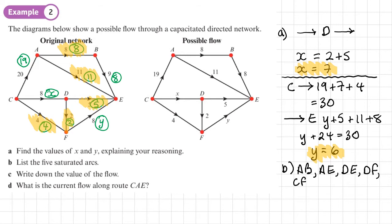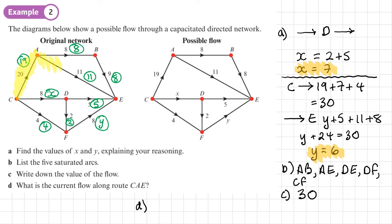Part C: write down the value of the flow. We worked this out in part A — the total coming out of the source is 30, the same as what's going into the sink, so the flow is 30. Lastly, what is the current flow along route CAE? Let's highlight that: C to A to E.